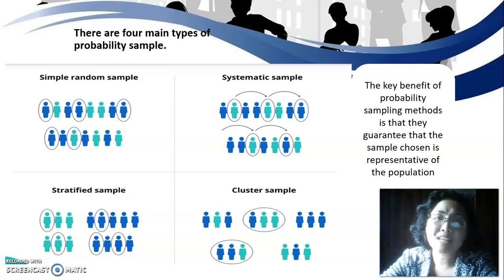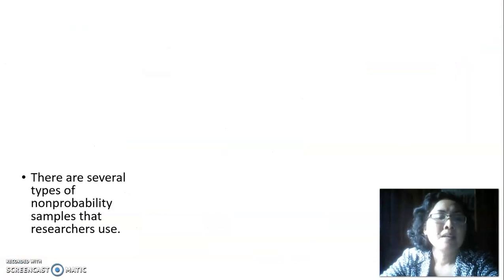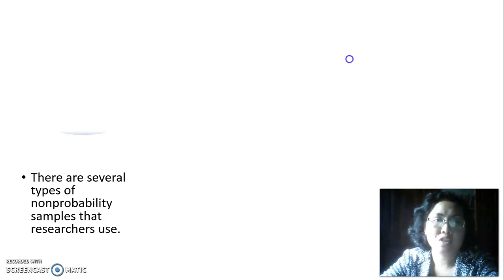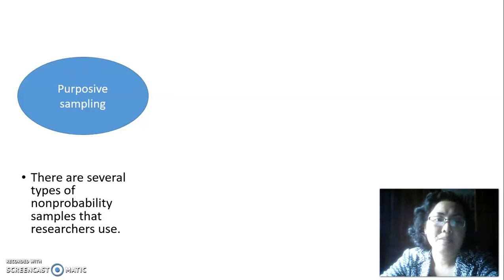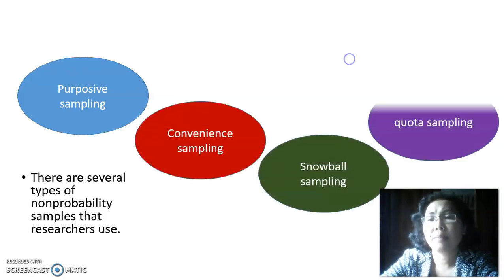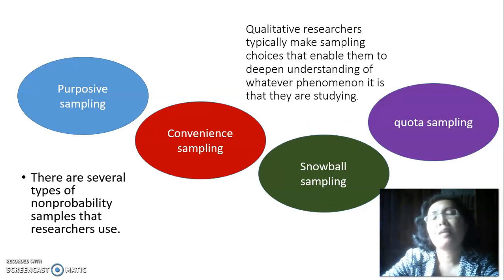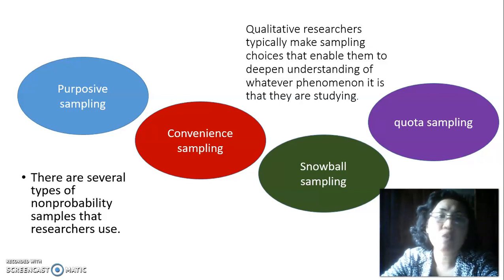This representativeness is something you don't need to worry about when doing qualitative research. In qualitative research, the non-probability sampling methods used include: purposive sampling, convenience sampling, snowball sampling, and quota sampling. Qualitative researchers typically make sampling choices that enable them to deepen understanding of whatever phenomena they are studying.